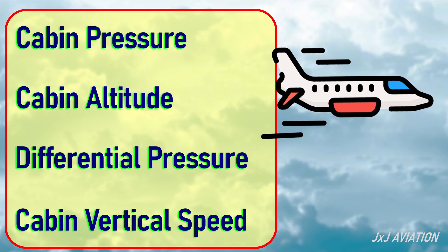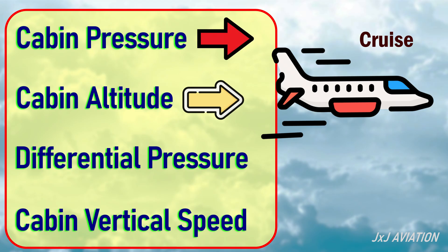During cruise, the cabin pressure, the cabin altitude, and the differential pressure will be constant. The cabin vertical speed will be zero.